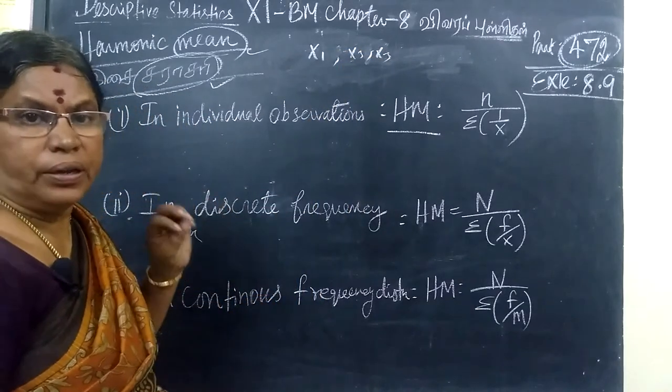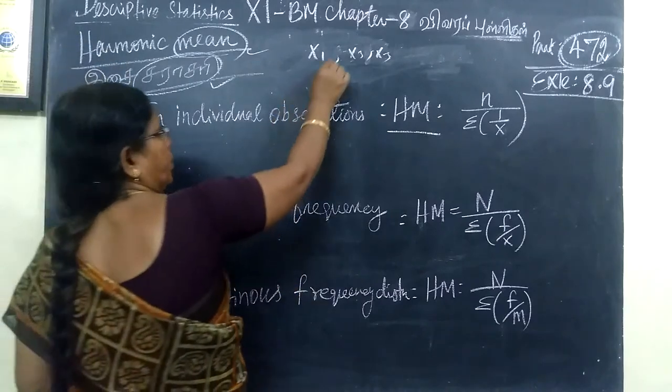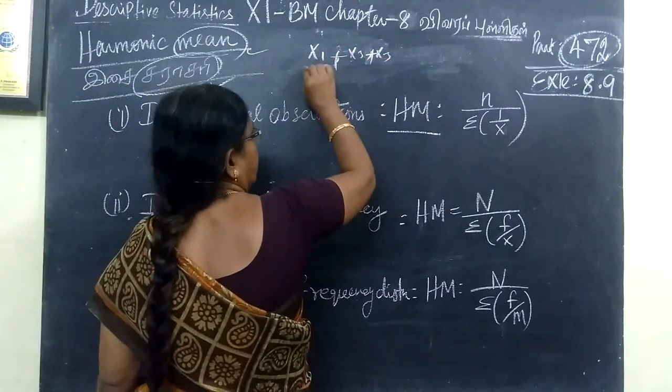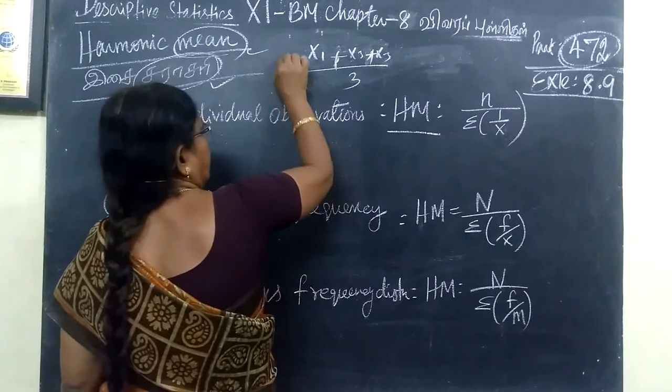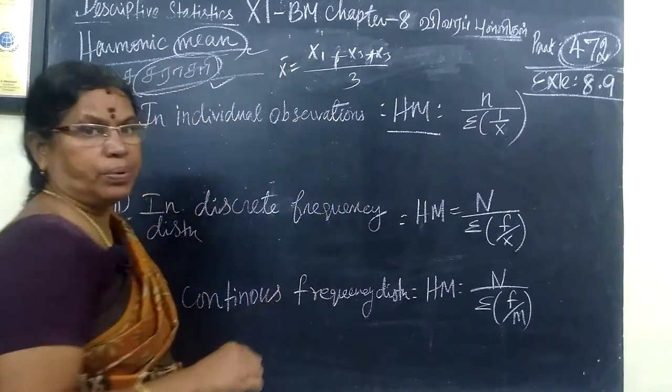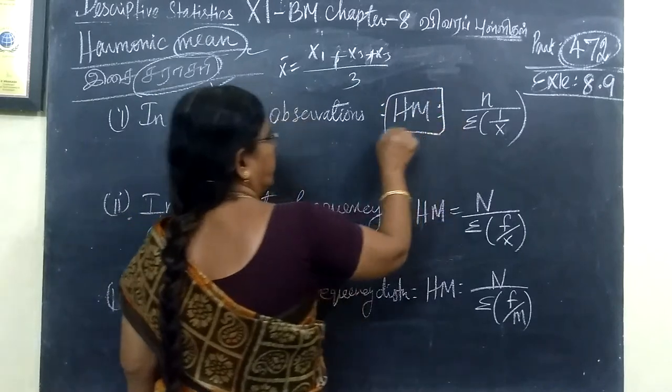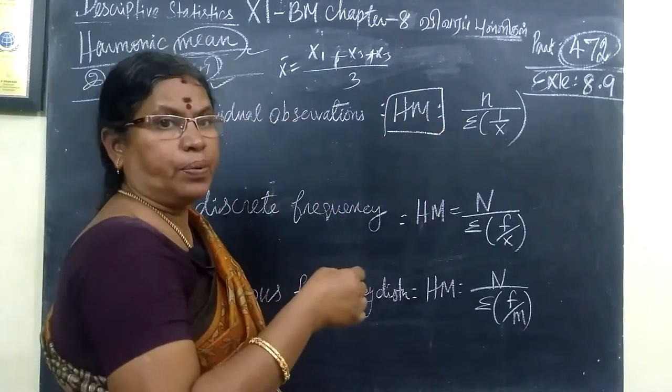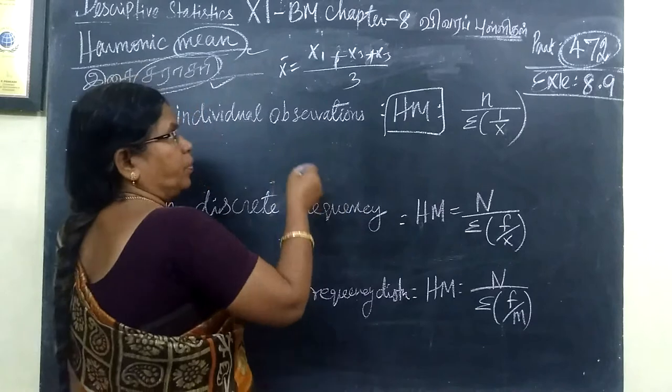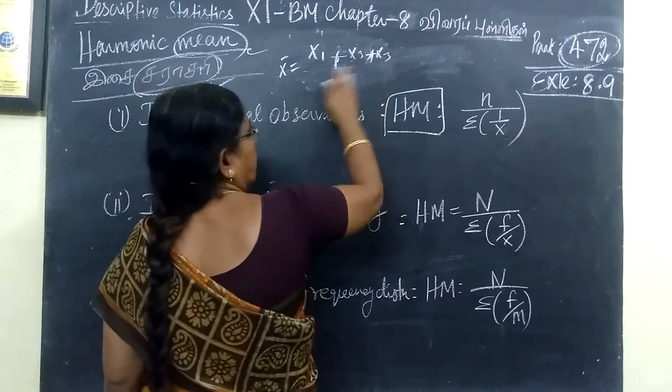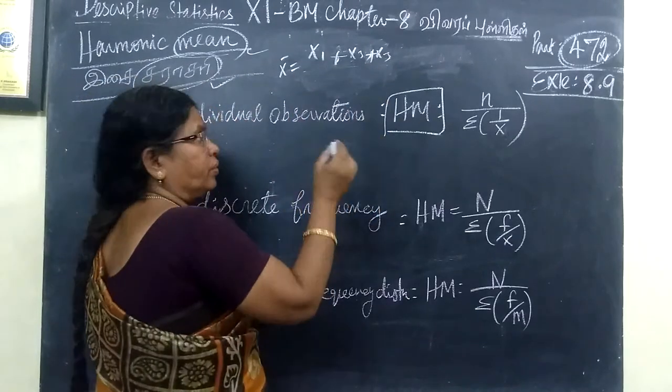For this, we are finding mean. We add all these three and divide by 3. This is x bar. Here, harmonic mean. We find the reciprocal of the arithmetic mean. That's it.